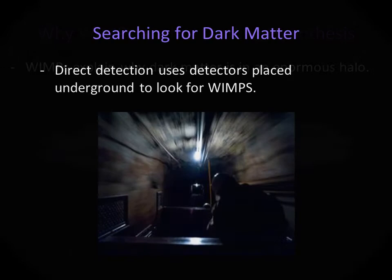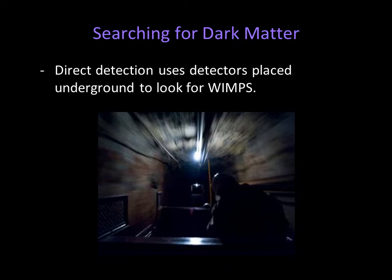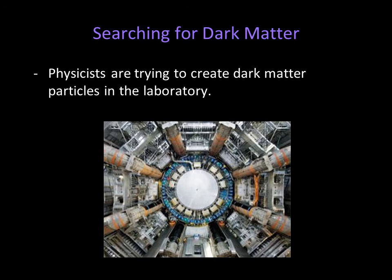The case for the existence of WIMPs is fairly strong, but not a sure thing. Detecting the particles directly is an enormous challenge. Astronomers are working on this in two ways. The first is with detectors that can potentially capture WIMPs from space. Because these particles interact only very weakly, the search requires building large sensitive detectors deep underground, shielded from other particles from space. So far, this area has provided some potential signals for dark matter, but no definitive proof. The second way is with high energy particle accelerators. Particle collisions in accelerators produce a variety of subatomic particles. None found so far has the characteristics of a WIMP, but scientists are optimistic that the Large Hadron Collider will soon reach collision energies great enough to produce dark matter particles.